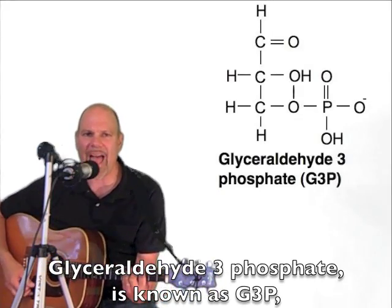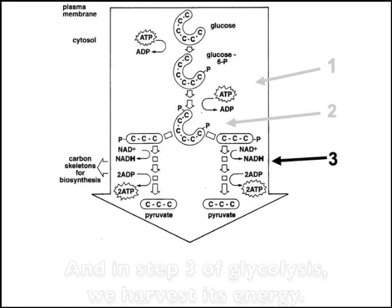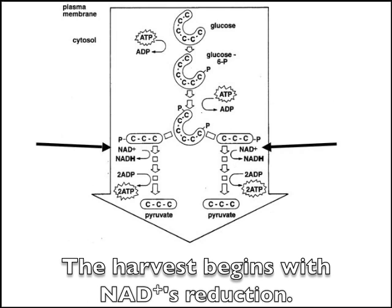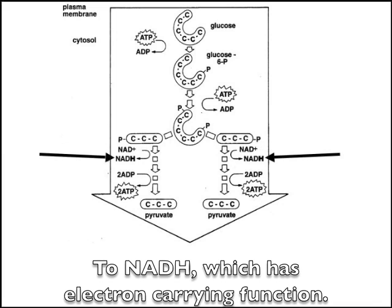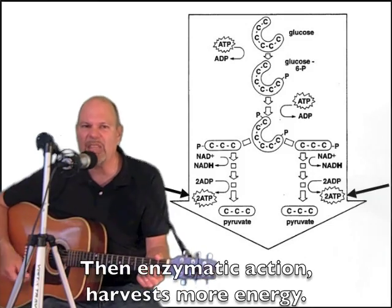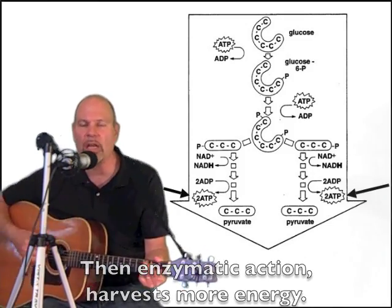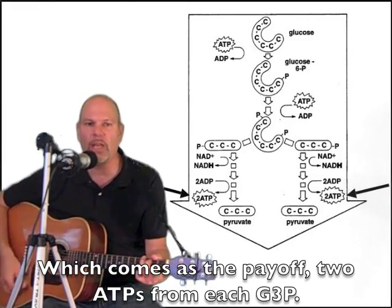Glyceraldehyde-3-phosphate is known as G3P, and in step 3 of glycolysis we harvest its energy. The harvest begins with NAD+ reduction to NADH, which has an electron-carrying function. Then enzymatic action harvests more energy, which comes as the payoff of 2 ATPs from each G3P.